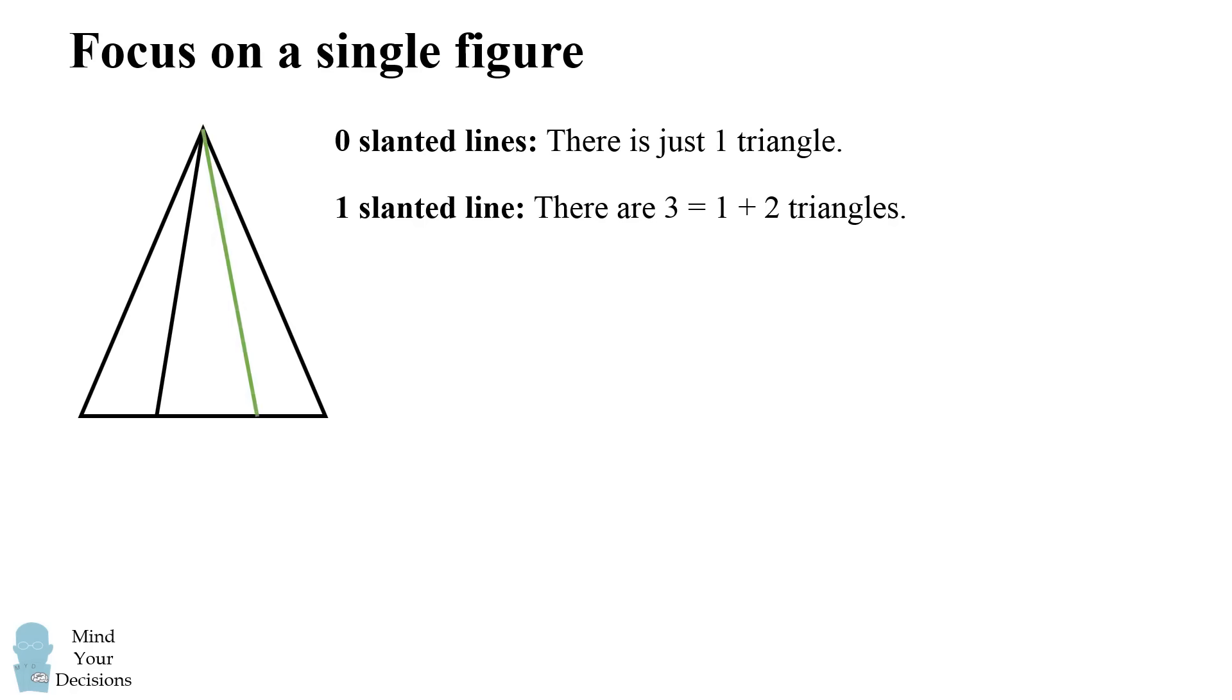So what happens if we put another slanted line on the inside? Well, we still have the three triangles from before. We have the one big triangle. We have these two triangles from the one slanted line case, and now we've created some new triangles.